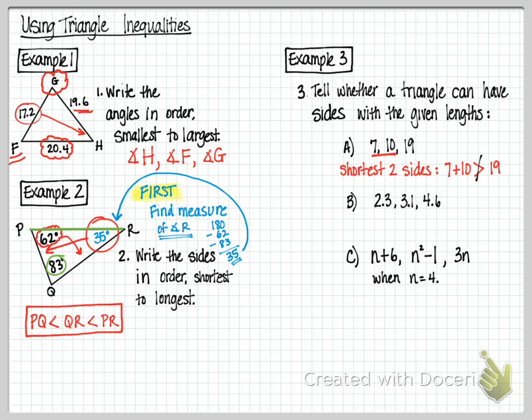For the first one, the two shortest sides are 7 and 10. 7 plus 10 is not greater than 19, and that triangle inequality theorem said they must be greater than the third side. Since they're not greater than the third side, no, you can't make a triangle.